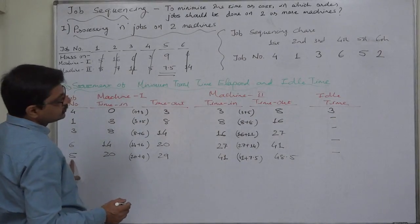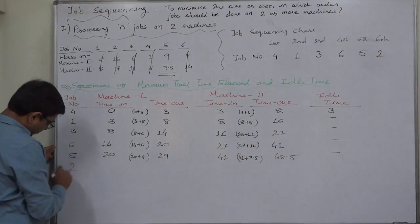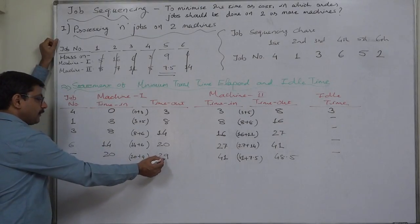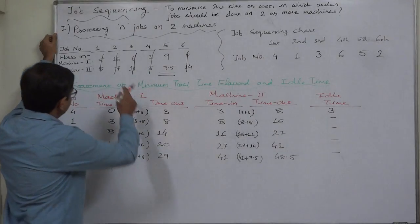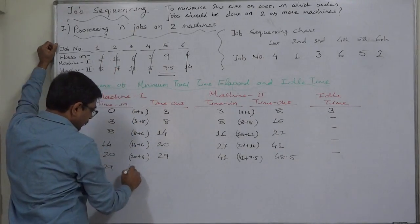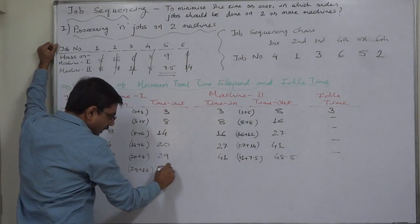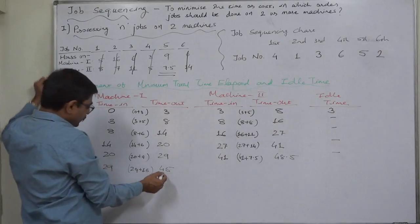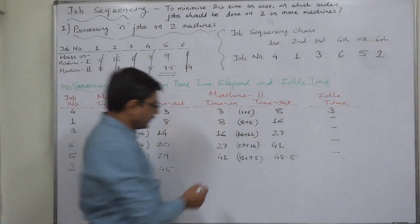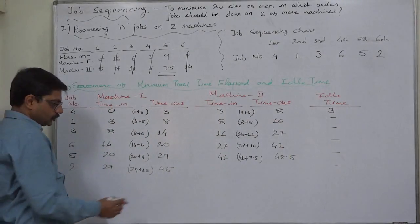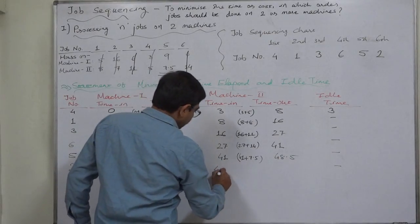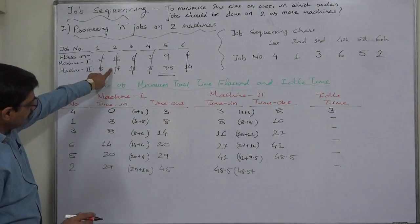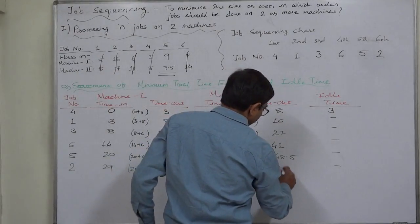After completing job number 5 on machine 1, it is the turn of job number 2. 29 becomes its timing because immediately after completing job 5, machine 1 takes job number 2. Job number 2 requires 16 hours on machine 1, so 29 plus 16 gives 45 as the time out. But at that time machine 2 is still busy completing job number 5, so job 2 has to wait — no idle time. Idle time will be there only if the machine has to wait. 45 or 48.5, whichever is higher, gives 48.5. Job number 2 requires 7 hours on machine 2, so 48.5 plus 7 gives 55.5.